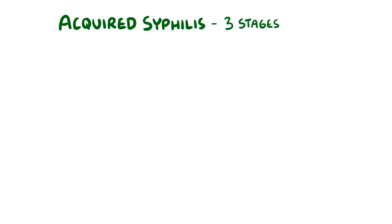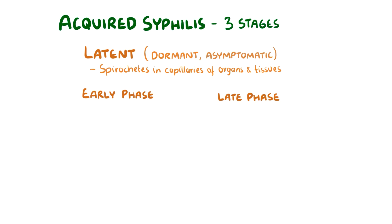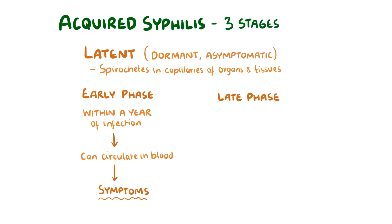After secondary syphilis is a latent phase called latent syphilis. This is when the disease enters a dormant or asymptomatic phase. During this phase, the spirochetes can mostly be found in the tiny capillaries of various body organs and tissues. Latent syphilis can be further divided into an early phase and a late phase. Early latent syphilis occurs within a year of infection, and during that time, the spirochetes can re-enter the blood, meaning they can still be found circulating in large numbers causing symptoms of secondary syphilis. The late latent phase is generally after a year, as the spirochetes generally stay within the tiny capillaries of various body organs and tissues.